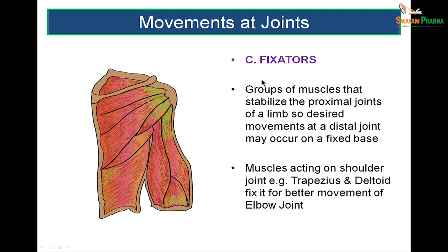Fixators are a third group of muscles which fix a joint in order to allow other finer movements. For example, muscles such as trapezius and deltoid can fix the shoulder joint, and if the shoulder joint is fixed and stabilized, there can be better, more precise movements at the elbow joint.